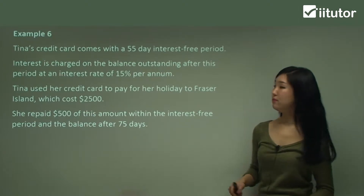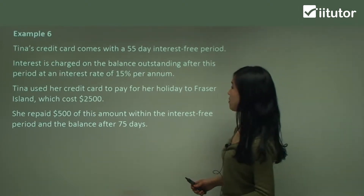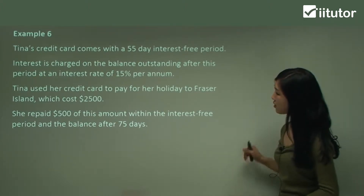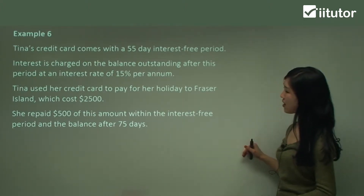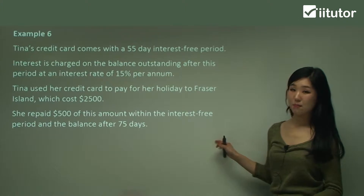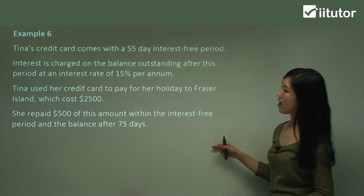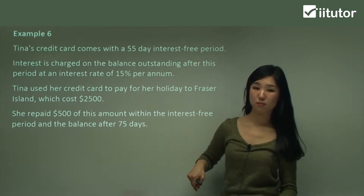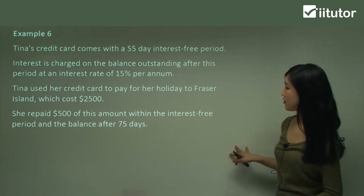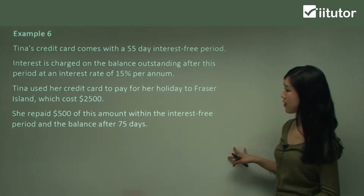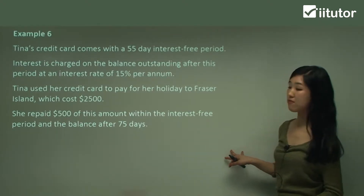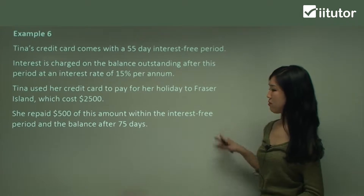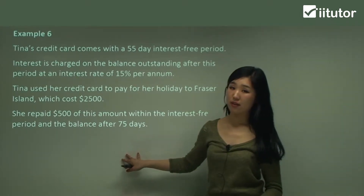Starting with an example: Tina's credit card comes with a 55-day interest-free period. Interest is charged on the balance outstanding after this period at an interest rate of 15% per annum. So after that period, if you still haven't paid your debt, this is going to be your interest rate. Tina used her credit card to pay for her holiday to Fraser Island, which costs $2,500. She repaid $500 of this amount within the interest-free period and the balance after 75 days.